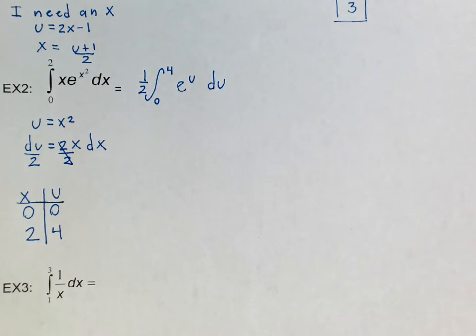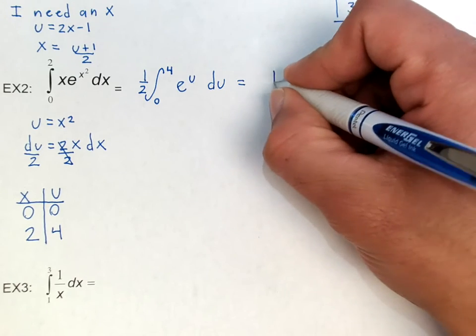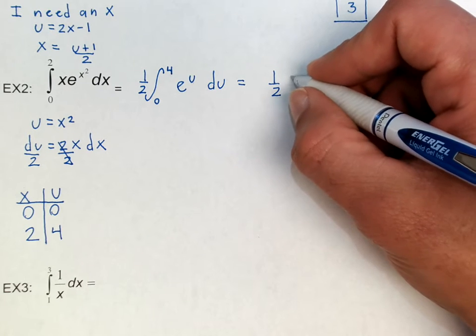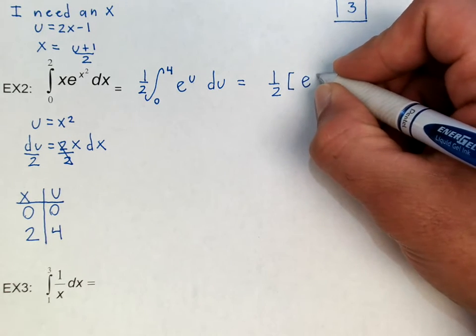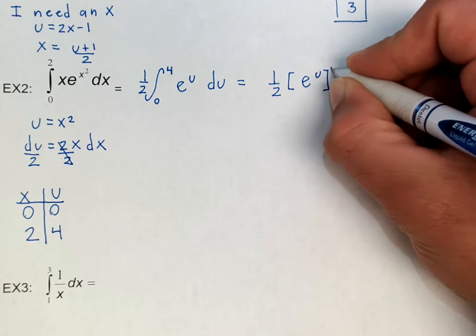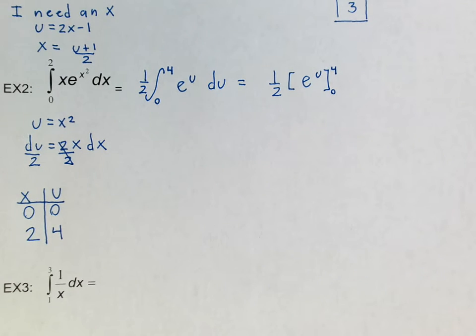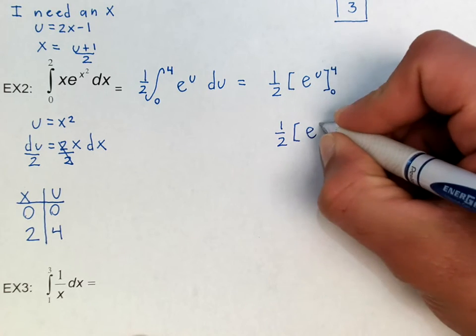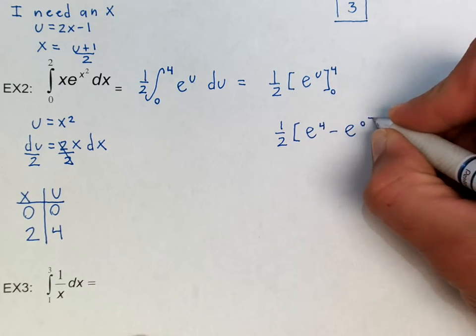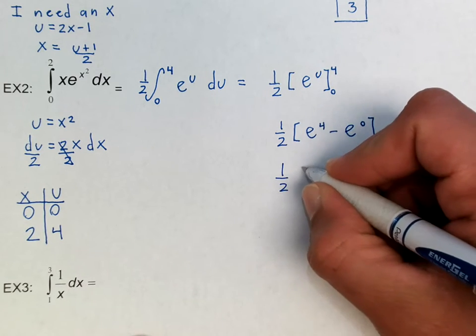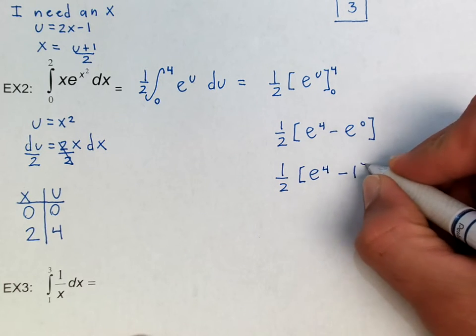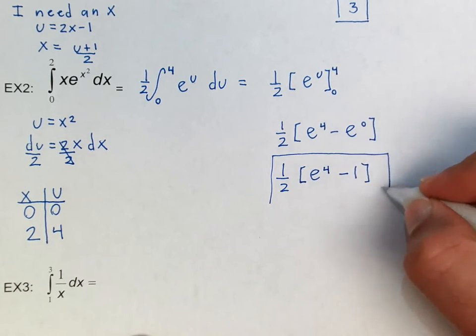So when we integrate that, which you should, this should be your favorite thing to integrate. Because the derivative of e to the u, sorry, the anti-derivative of e to the u is just e to the u. e to the u plus c, to be precise. But because we're evaluating when 2 is 0 and 4, we don't need to write c because we're going to cancel that. So that's what we have so far. We're going to plug in 1 half e to the 4 minus e to the 0. Now, as you should know, e to the 0 is just 1. Any number to the 0 power is 1. So that is going to be your answer.